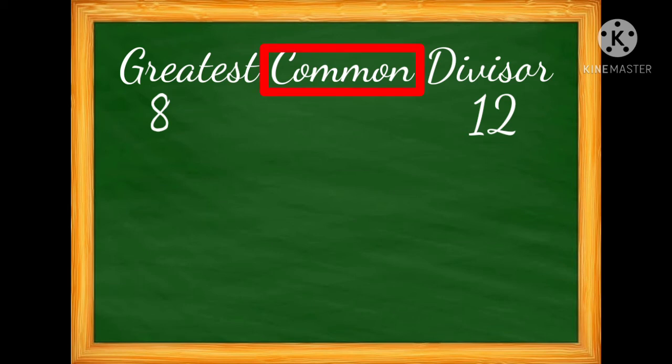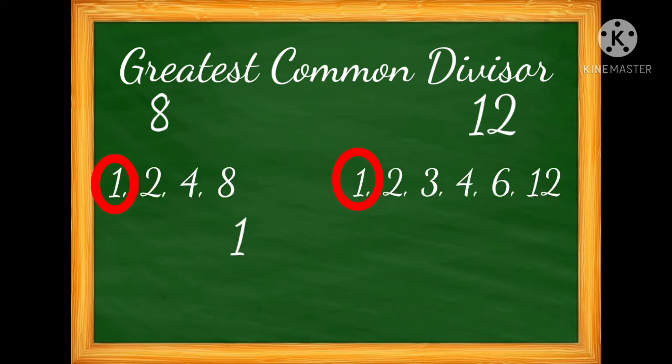The next step is 'common.' We look for common divisors for each of the numbers. 1, 2, and 4 are common factors of both numbers. And the last step is 'greatest.'